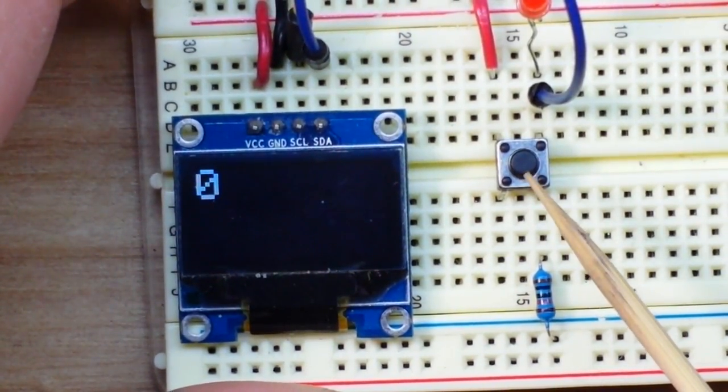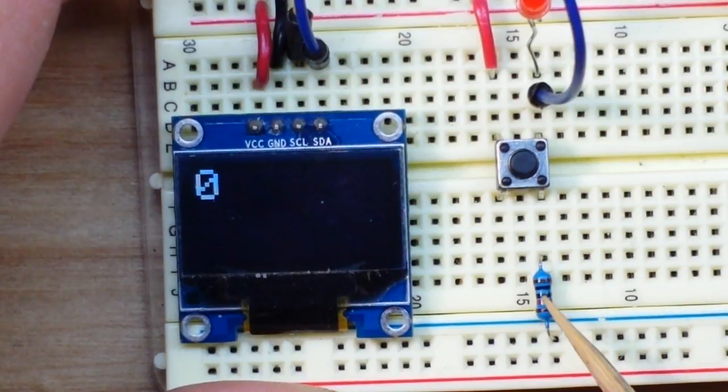All right, so here we have our setup. This is set with a pull-down resistor. So here's our switch, and here's our 10k pull-down resistor pulling it to ground.